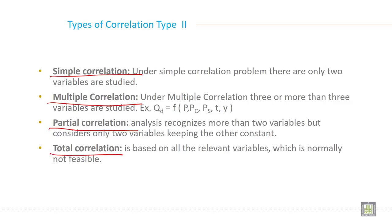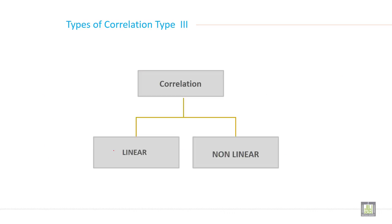Total correlation is based on all the relevant variables, which is normally not feasible. Now types of correlation in third categories.